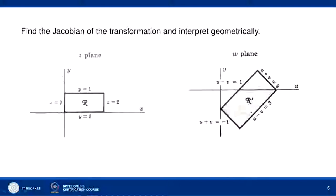This is the y-axis, this is the x-axis. So this is the line y = 0, this line is x = 0, we have x = 2 here and y = 1 here. So it is a rectangular region bounded by x = 0, y = 0, x = 2, and y = 1.